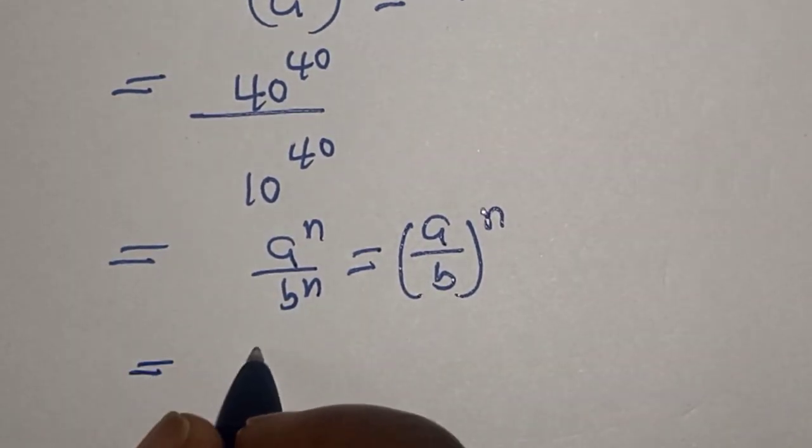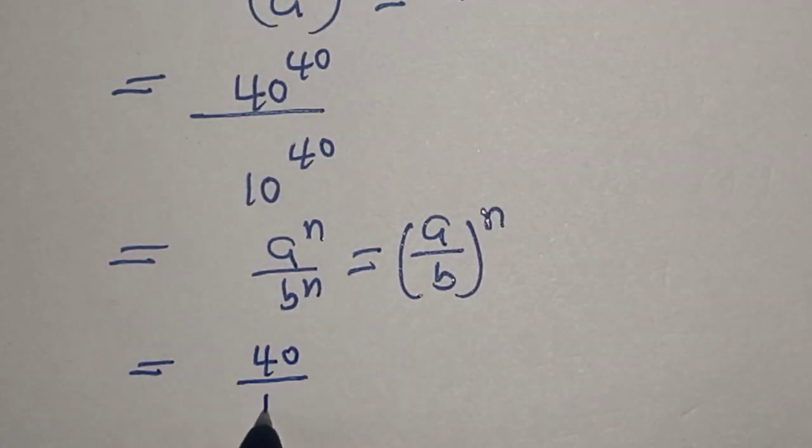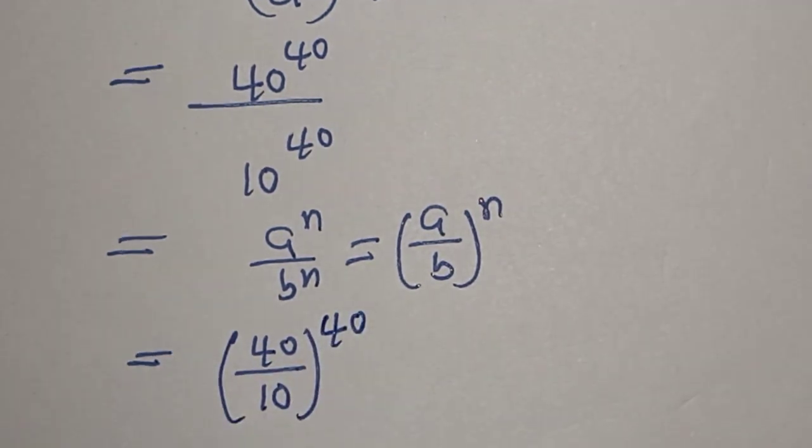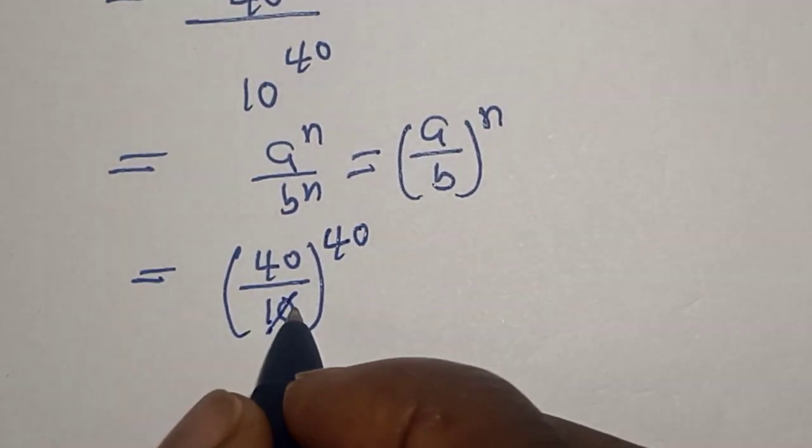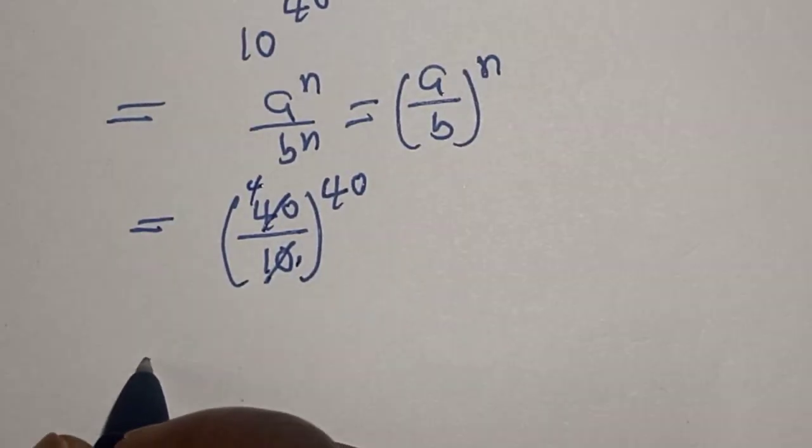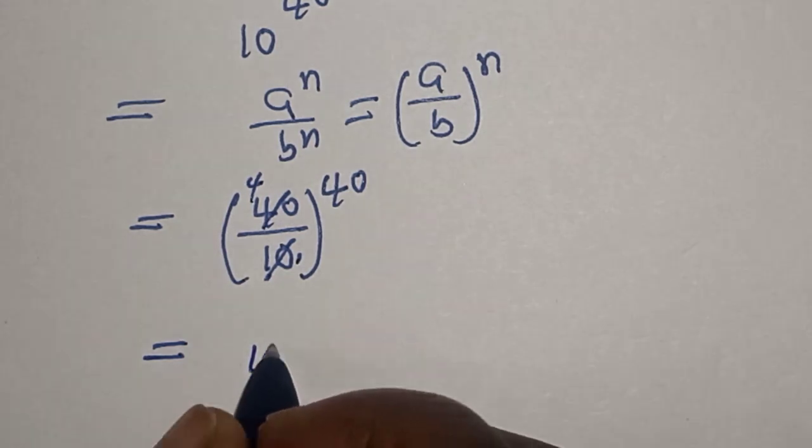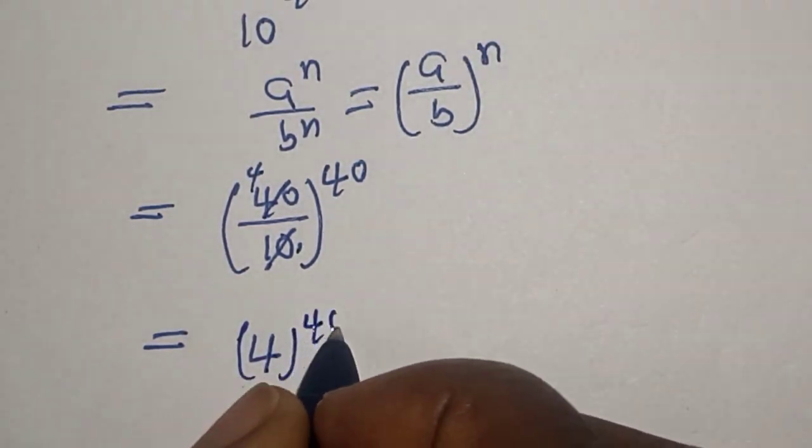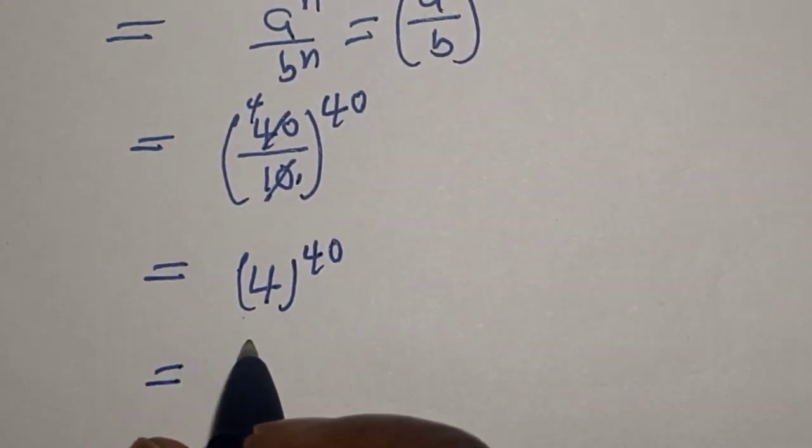this is equal to 40 over 10 raised to power 40. Then this 10 here, 1, 10 here 4, so this is 4 raised to power 40. Now 4 can also be written as